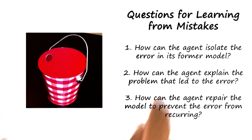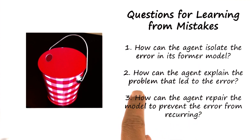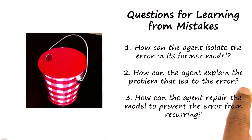This brings us to the second question in learning from failures. Now we want the agent to explain why a particular fault in its knowledge led to its failure.